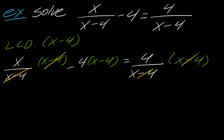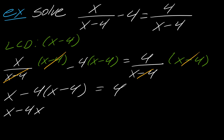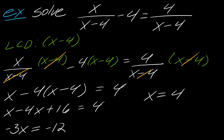So what am I left with? I'm left with just x minus 4 times x minus 4 equals 4. So I've really simplified this problem. I go through and subtract that 16, so this becomes negative 12, and I solve this and get x equals 4.